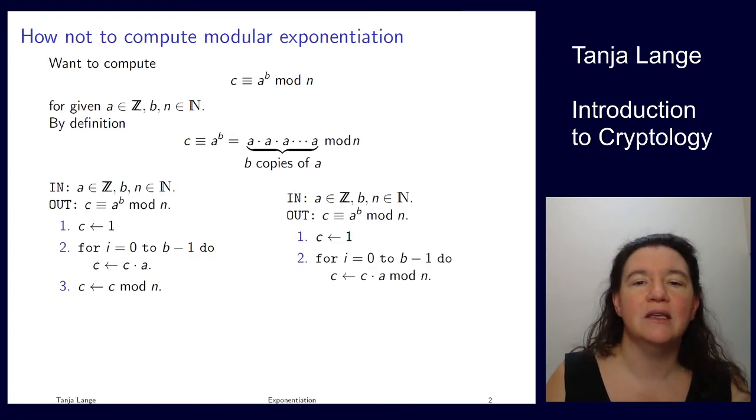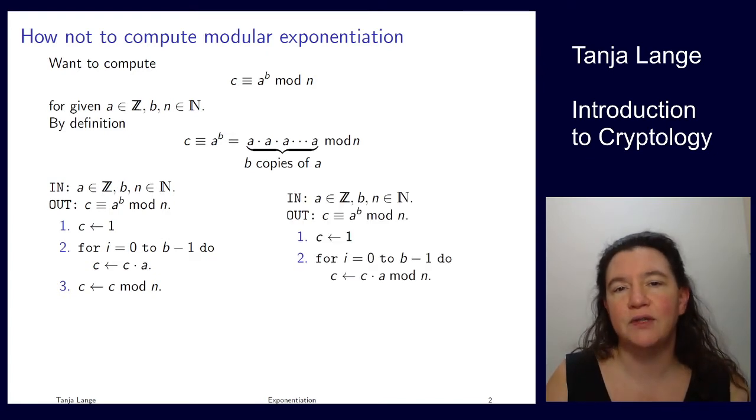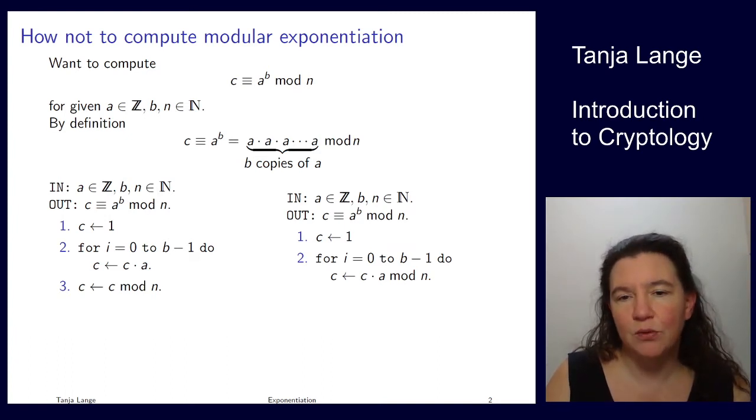So on the right I'm putting a slightly better version, but that still fits onto the subject line how not to compute modulo exponentiation, because we know much better algorithms how to do this. So here at least we are reducing after each product, so the numbers don't get very large, but it's still not a fast method.